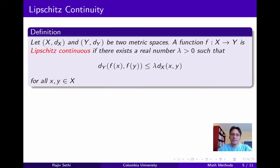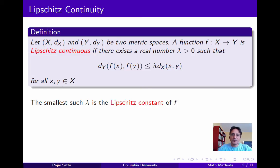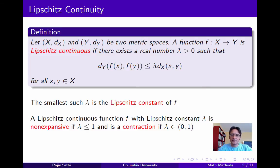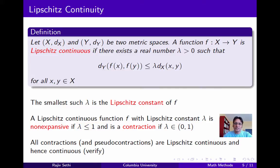Next, consider Lipschitz continuity. Here we make the distance functions explicit. Let X, dX, and Y, dY be two metric spaces. We say that a function from X to Y is Lipschitz continuous if there exists a real number lambda such that the distance between the images of x and y is less than or equal to lambda times the distance between the points x and y, for all pairs of points x, y in the domain. We refer to the smallest lambda for which this inequality is satisfied as the Lipschitz constant of f. If lambda is strictly between zero and one, this definition corresponds exactly to the definition of a contraction. And if lambda is less than or equal to one, we say that the function is non-expansive. You should verify that all pseudo-contractions are in fact non-expansive.